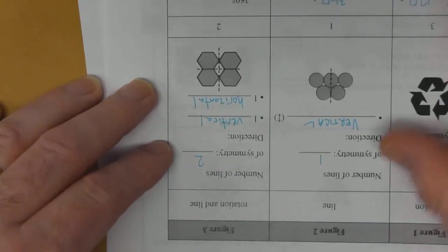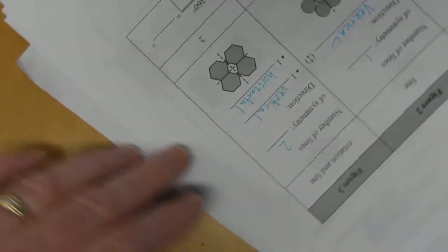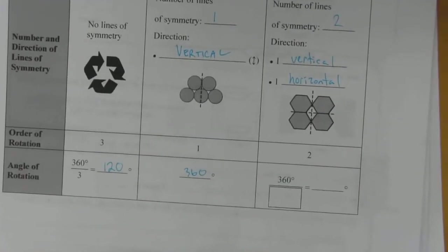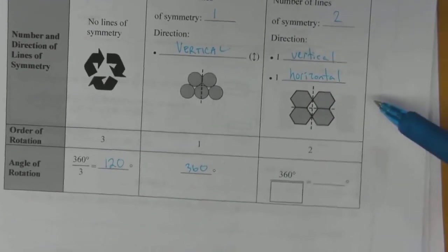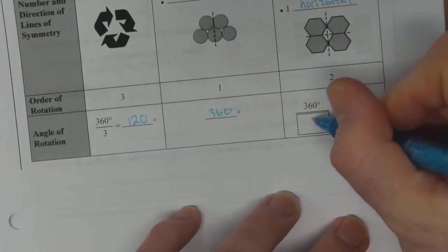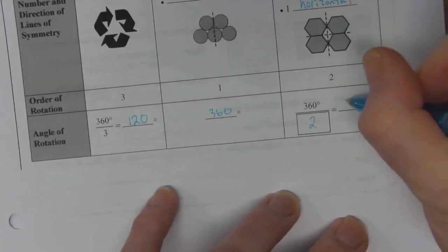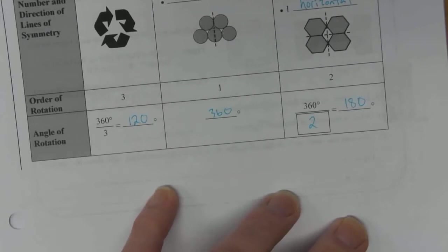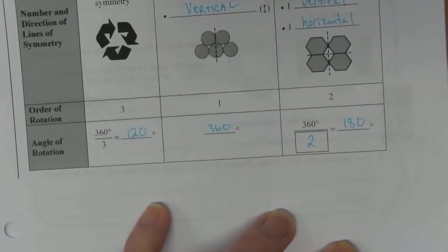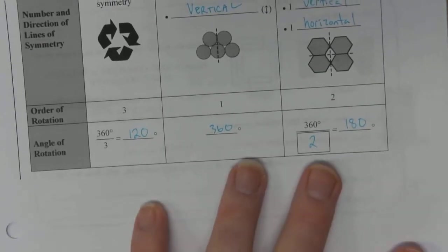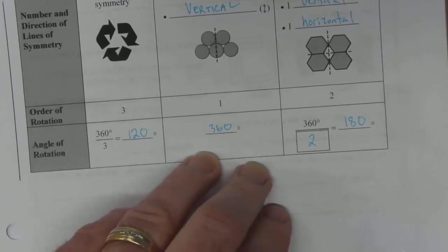That's one point where it matches. And so there's a total of two points then: one halfway and one at the end. So 360 divided by 2, or 180 degrees. So that's what we're looking for on that one.